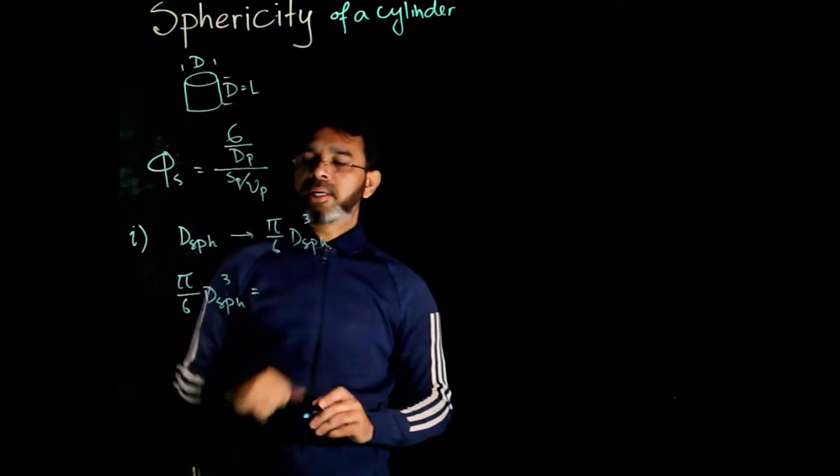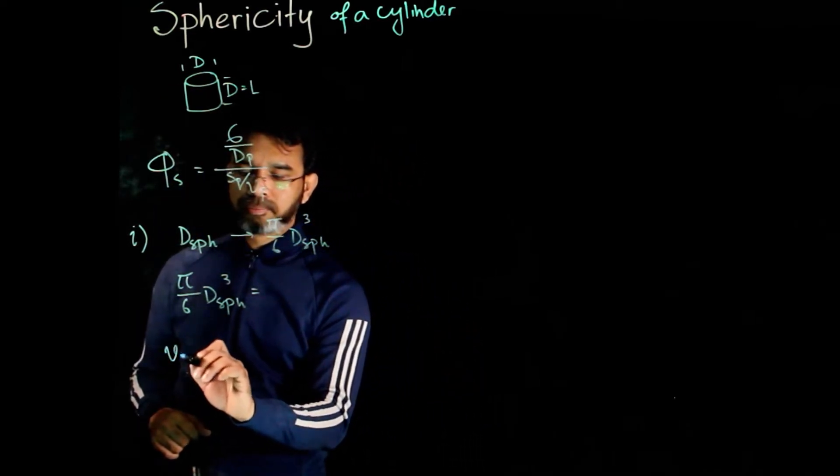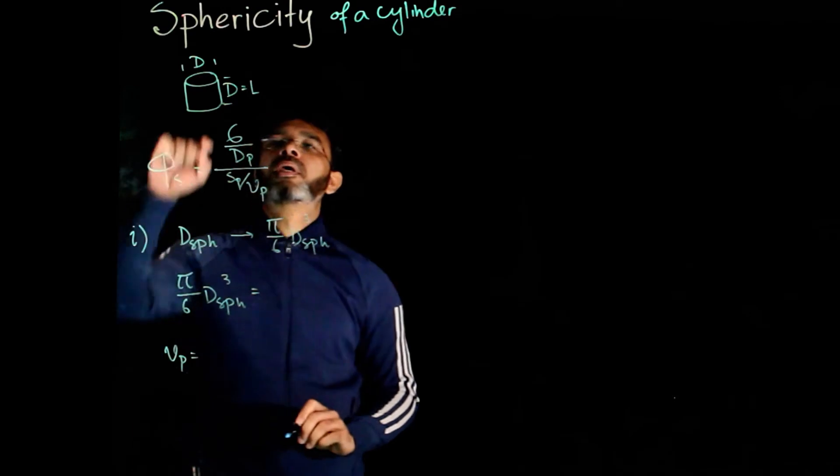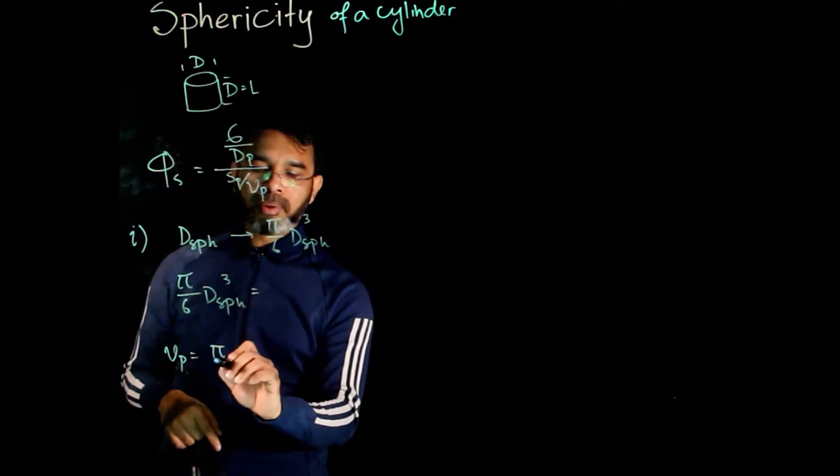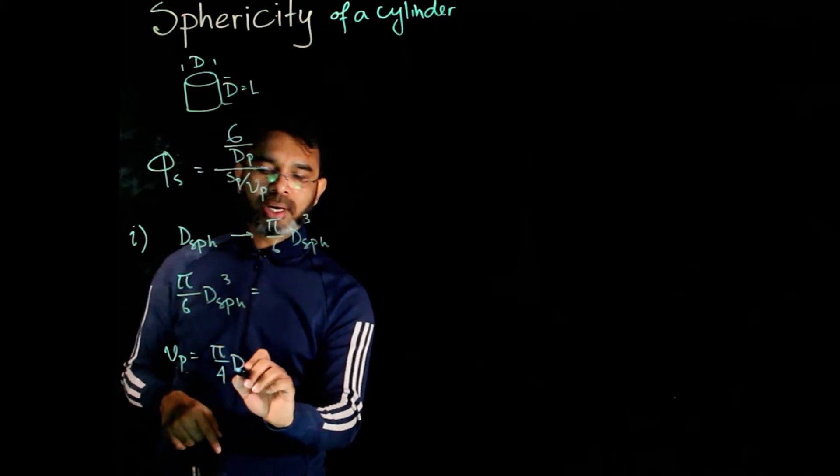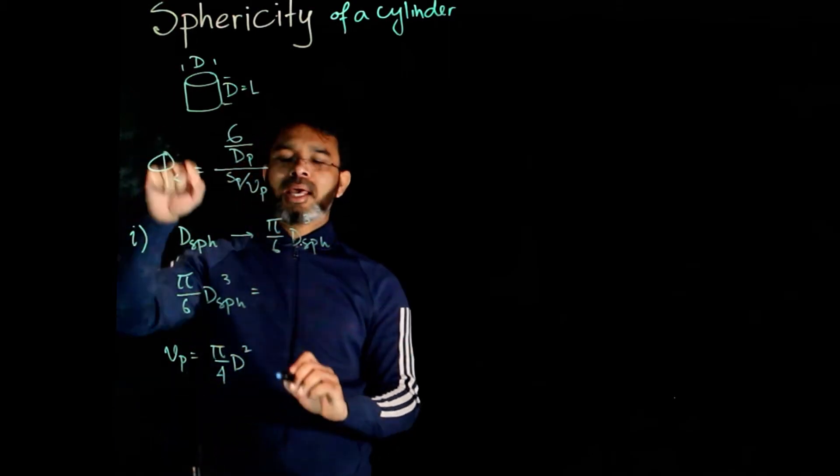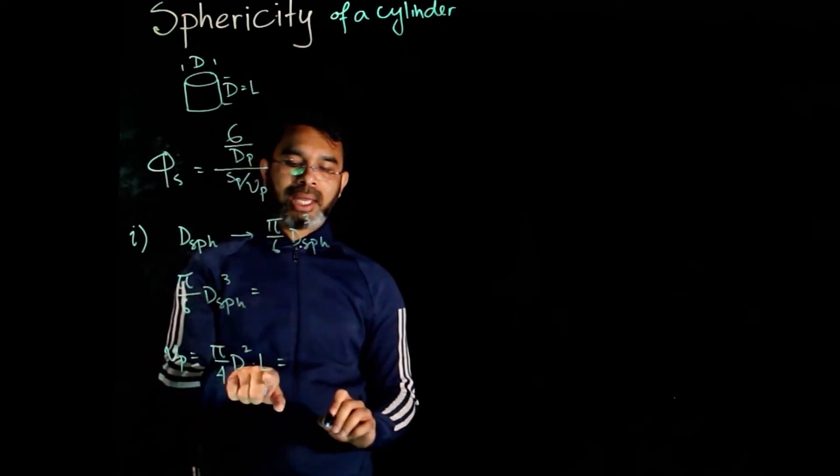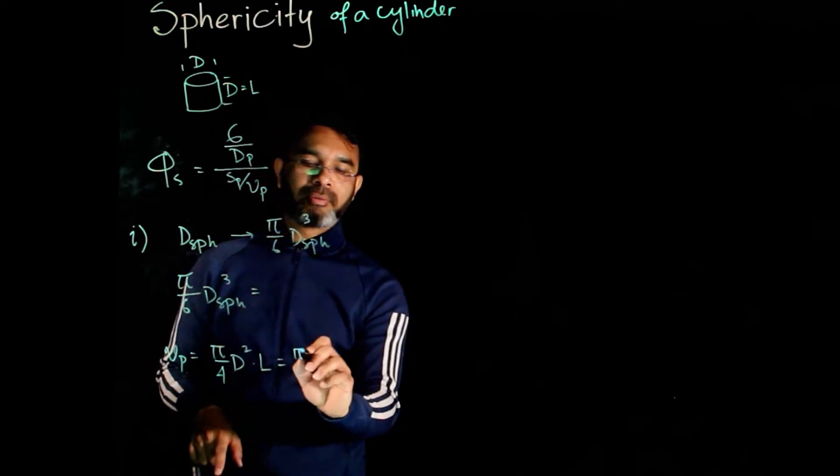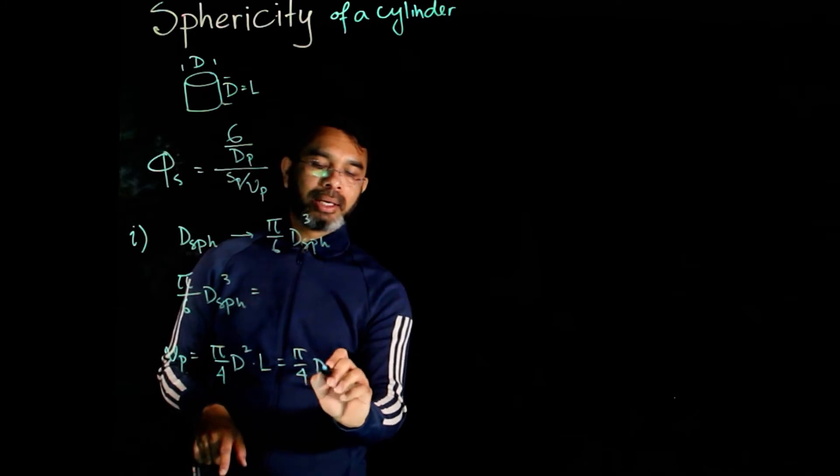Now, for a cylinder, the volume is the cross-sectional area, which becomes pi over 4 d squared, and the length becomes l. So, we put in l equals d, we get pi over 4 d cubed.